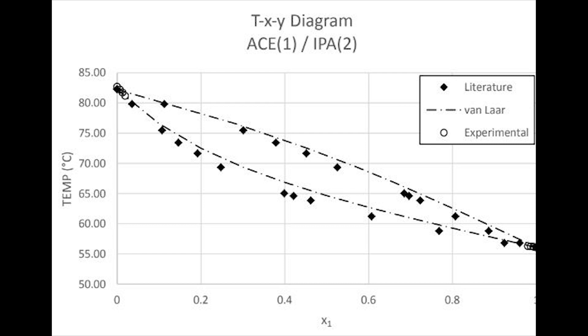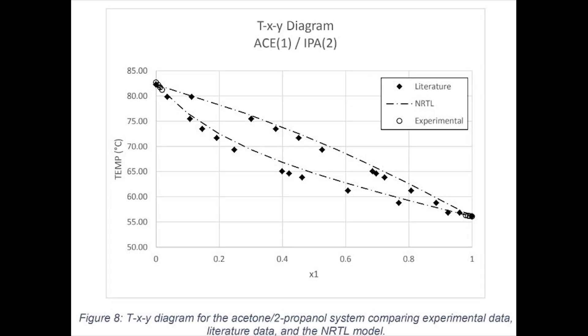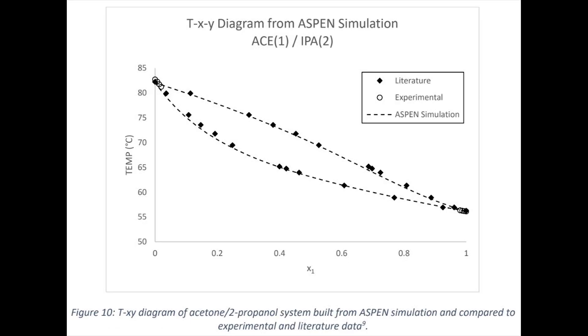From the calculation, a TXY diagram of acetone and IPA can be made. You can create TXY diagrams comparing literature experimental to NRTL and Van Laar models. Simulating this system in Aspen can also be accomplished. This is the figure for the Aspen simulation for the acetone and IPA TXY diagram. And that completes the data analysis.